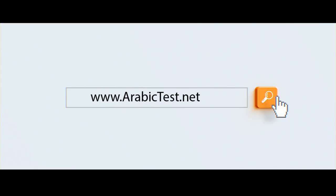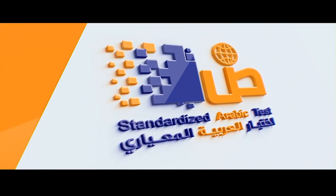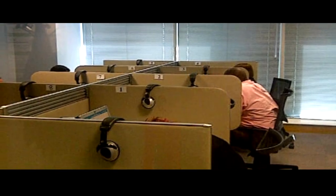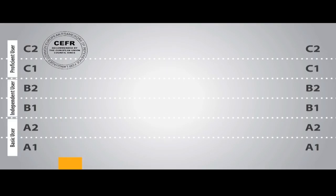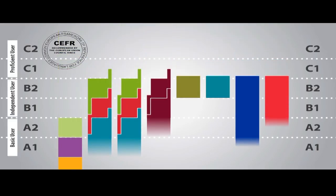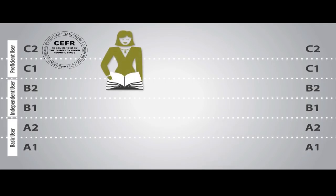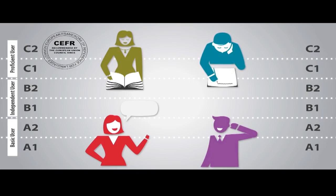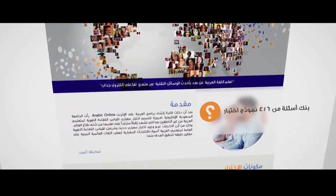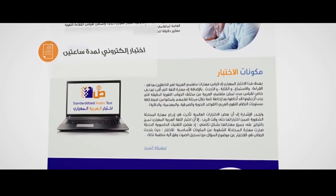لم تتوقف جهود الجامعة السعودية الإلكترونية عند هذه الحدود، بل قدمت اختبار الكفاية اللغوية في اللغة العربية — اختبار العربية المعياري — الذي يعد الأول من نوعه على مستوى العالم. وهو اختبار موجه لمتعلم اللغة العربية في مرحلة المستوى المتقدم C1 وC2 وفقاً للإطار الأوروبي المرجعي المشترك للغات، يقيس مهارات القراءة والاستماع والتحدث والكتابة، بالإضافة إلى مهارة اللغة التي أُفرد لها قسم خاص لقياس التمكن من القواعد النحوية والصرفية والمعجمية والدلالية.